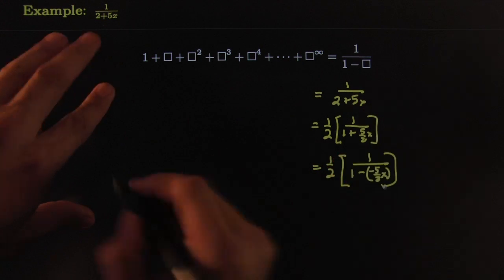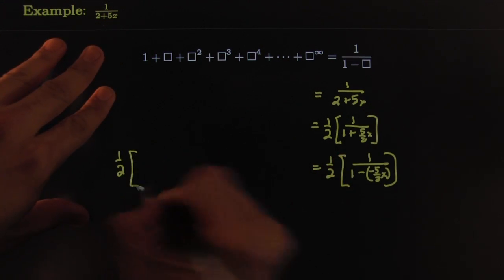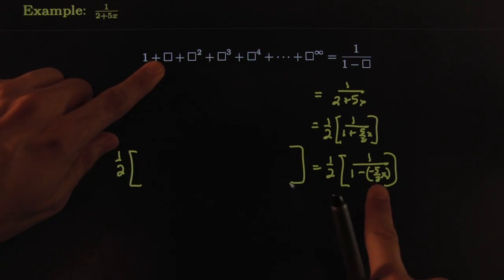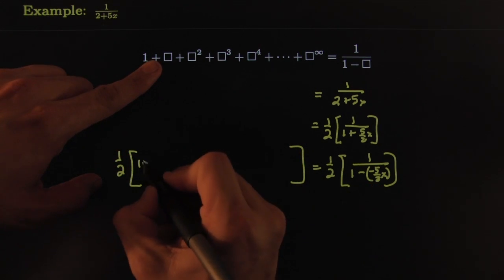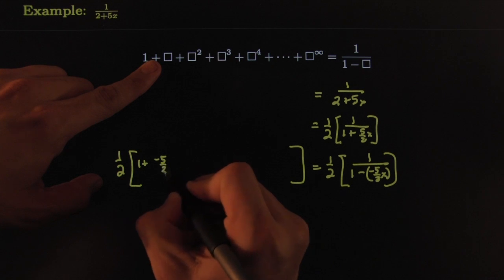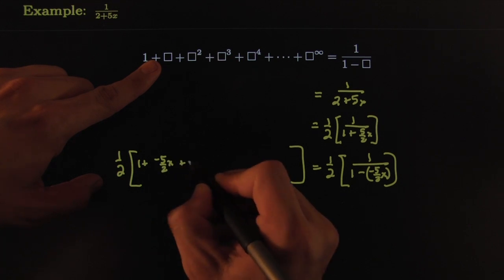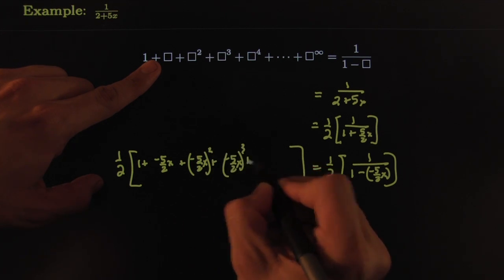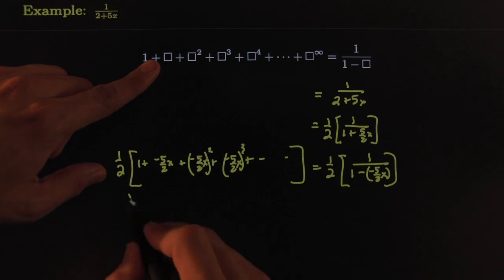So this becomes 1 half times the series. This thing that goes in the box would be negative 5 halves X. So this would be 1 plus negative 5 halves X plus negative 5 halves X quantity squared plus negative 5 halves X quantity to the third and so on and so forth.